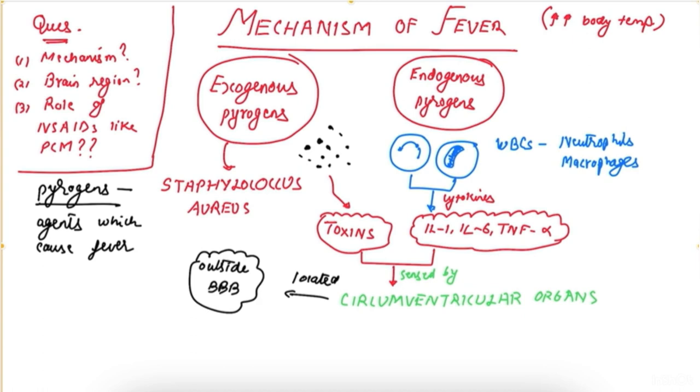These release prostaglandin E2 (PGE2), which is sensed by central thermosensors—you guessed it right—in the pre-optic area.